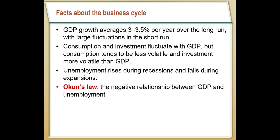When GDP starts to fluctuate, we usually see unemployment fluctuate as well. Unemployment tends to go up when the economy is not doing particularly well, and it tends to come back down when the economy is really strong. This negative relationship between GDP and unemployment we call Okun's law. It tends to hold pretty much internationally — anytime an economy is doing well, the unemployment rate is falling, and anytime an economy is doing poorly, the unemployment rate is going up.